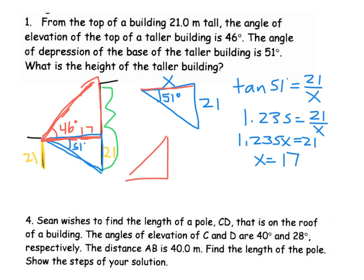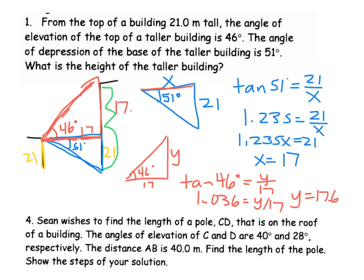So this horizontal side in the red triangle we now know is 17. And now I'm talking about height so I'm going to call that y. I need to find that height. So tangent 46 degrees equals y over 17. 1.036. Multiply both sides by 17. So y equals 17.6. So that's the top part of the tall building. But the bottom part of the tall building is 21. So 17.6 plus 21 equals 38.6 meters.